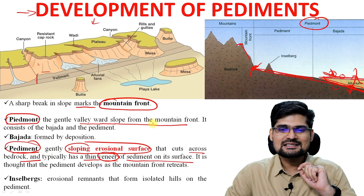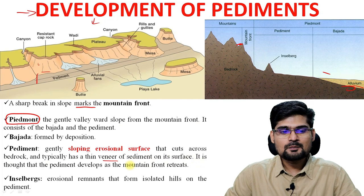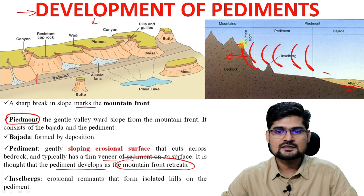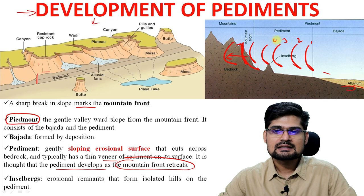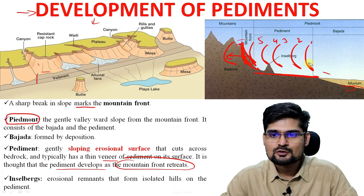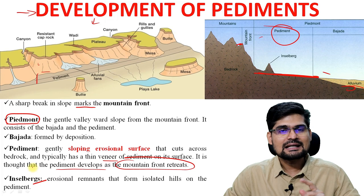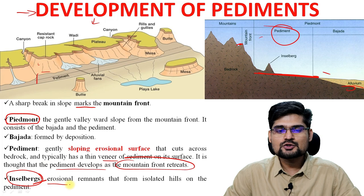Pediment develops as the mountain front retreats. When this retreats it goes back — level 1, level 2, level 3, level 4, level 5 — and because of gradual erosion of this particular mountain front, what is remaining is the pediment. It is a pure erosional surface. Now what are inselbergs? In Penck's theory and also L.C. King's theory, you find inselbergs — these are erosional remnants. This is called inselberg, also defined as bornhardts.